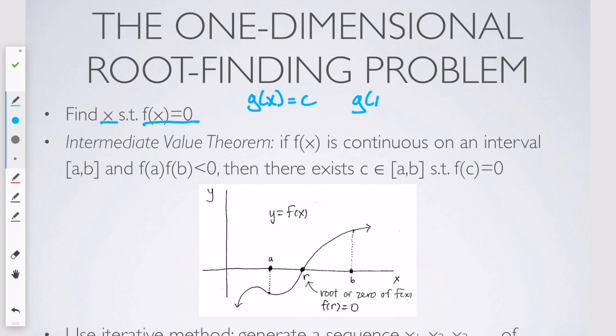You can rearrange that to write g of x minus c equals 0, and then you can think of this as being your f of x. So this is really for finding when a function is equal to any number.